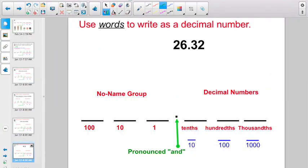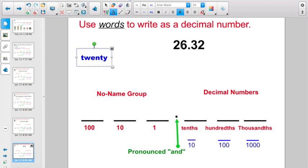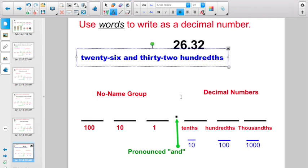Now, we're going to go and try it in the opposite direction. It says to use words, right? So, I have 26 in my no-name group. So, I'm just going to go and call this 26 decimal point. So, I'm going to type in and. And now, I have a 3 and a 2. That number is pronounced 32, right? 32 what? I got my 3 here, my 2 here. So, it's 32 hundredths. 26 and 32 hundredths.